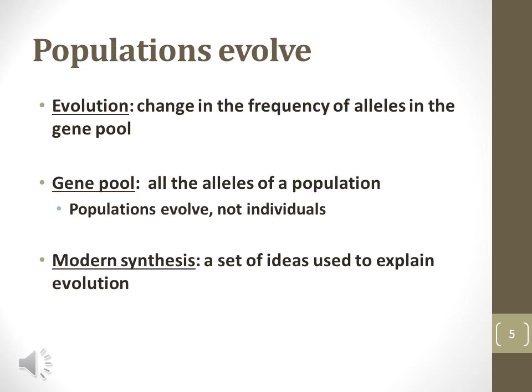Species evolution takes place at the population level. Evolution may be a result of a change of allele frequency in a gene pool. A gene pool is all of the alleles in a population, and it is the gene pool that adapts generation to generation. Individuals of a single generation cannot genetically adapt in their lifetime. The modern synthesis uses genetic knowledge of the chromosome theory of inheritance to explain the evolution of species over time, as described by Darwin.